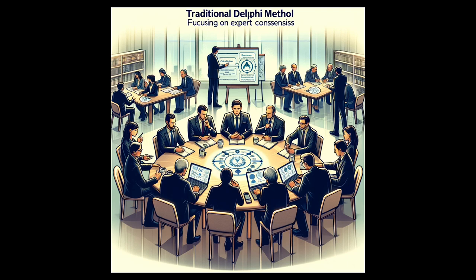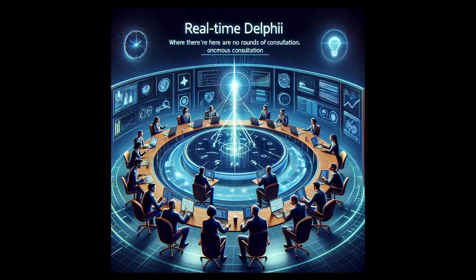The most well-known method variations are: 1. Traditional Delphi, which aims for consensus among experts through iterative survey rounds. 2. Real-time Delphi, enabling a rapid feedback and updating process within a single survey round. Questions and answers are available and can be responded to in real time by the panelists throughout the process.